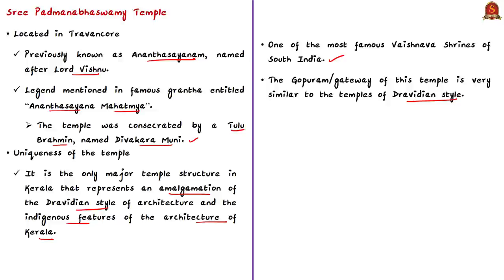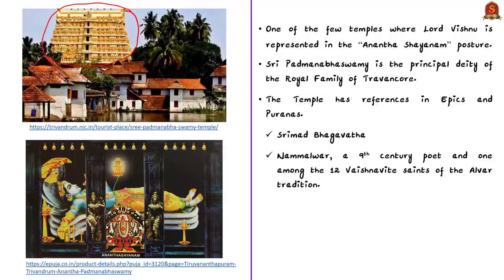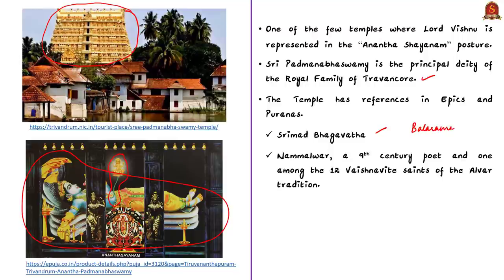The gopuram or gateway of this temple is very similar to temples of the Dravidian style, mostly found in the state of Tamil Nadu — no other major temple in Kerala has a gopuram of such an elaborate nature. Furthermore, it is one of the few temples where Lord Vishnu is represented in the Anantashayanam posture — the eternal yogic sleep on the serpent Adishesha — with Brahma the creator seated on a lotus stemming from Lord Vishnu's navel. Sri Padmanabha Swami is considered the principal deity of the Travancore royal family. The temple has references in epics and Puranas; for example, Srimad Bhagavata says that Balarama visited this temple.